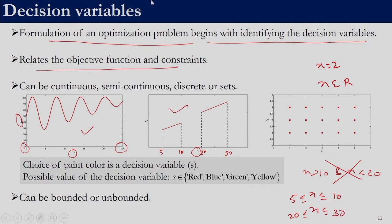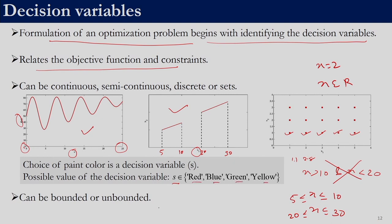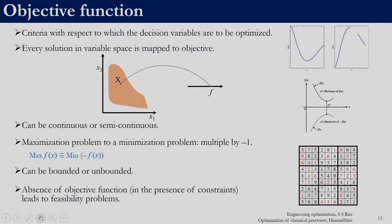The decision variable can be continuous, semi-continuous, integer, or it can even be a set — for example, deciding which color to use to paint a country on a map, where the options are red, blue, green, yellow. In most real-life problems the decision variables are bounded, but mathematically a decision variable can also be unbounded. Now that we have covered decision variables, let us move on to the objective function. The objective function is the criterion with respect to which the decision variables are to be optimized — our task is to determine the values of the decision variables so that the objective function is either minimum or maximum.